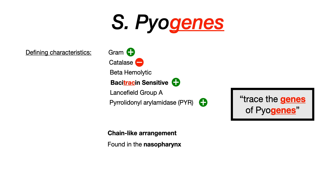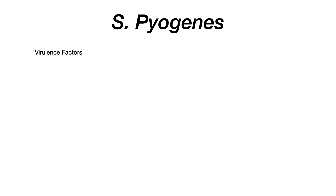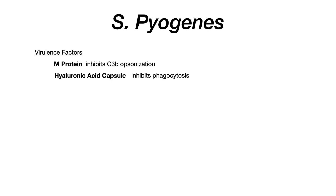Now let's talk about virulence factors. They're important, though probably not as high yield as the associated clinical features, since Strep pyogenes can cause a vast array of clinical diseases and syndromes. We'll go through the virulence factors somewhat quickly. The first two — M protein and a hyaluronic acid capsule — are listed together because they're very similar.